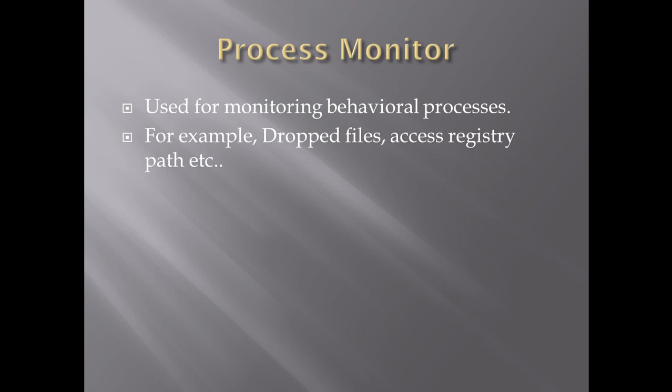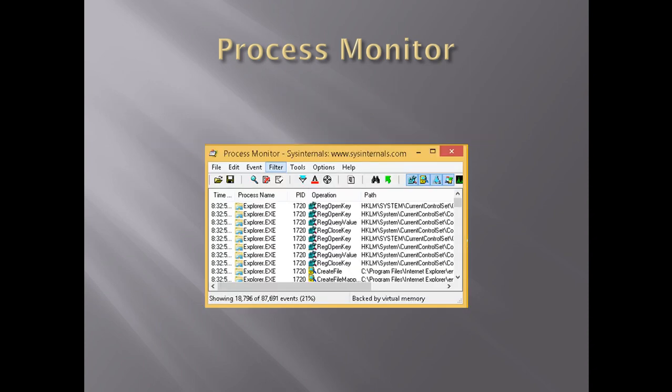For malware that steals information from your machine, you will see it accessing registry paths and reading information — maybe some malware can read the activation key, maybe just read a license, maybe get browser caches. You're going to see everything like that in Process Monitor. Sometimes you will get a dropped file of malware, other times you will get registry access — it depends on the behavior of the malware. The Process Monitor UI gives you the time an operation happened, the process name, the operation, and the registry path.